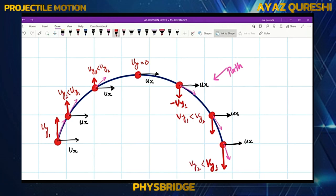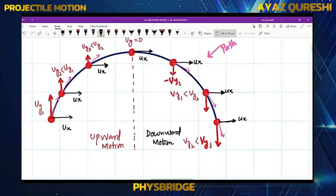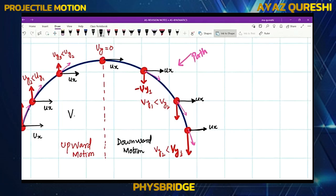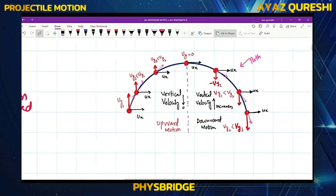It's simple to understand: this first half is the upward motion and the second half is the downward motion. In upward motion, the vertical velocity decreases to zero. In downward motion, the vertical velocity increases to a maximum.